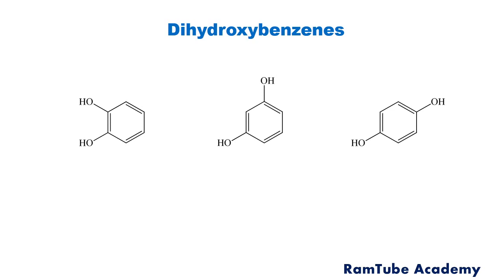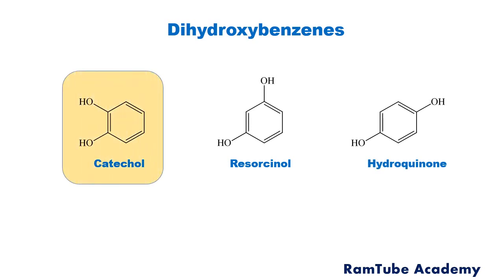The first one is catechol, the second one is resorcinol, and the last one is hydroquinone. Remember the structure of catechol, which contains two hydroxyl groups on adjacent carbons, and hence the IUPAC name is 1,2-dihydroxybenzene. Try to give the IUPAC names to the other two molecules.